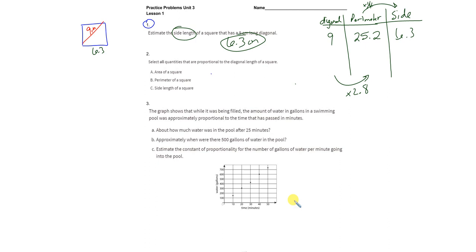Looking at number two. We're jumping right in and number two is just selecting. We don't have to do any explanations. All we have to do is select all that are proportional.